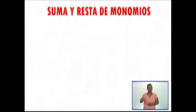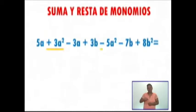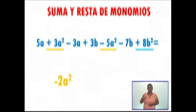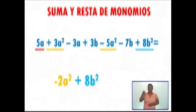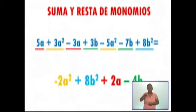Vamos a ver otro ejemplo. Aquí tengo 5a más 3a cuadrada menos 3a más 3b menos 5a cuadrada menos 7b más 8b cuadrada. Empiezo con los términos semejantes en orden alfabético, los cuadráticos primero. 3a cuadrada menos 5a cuadrada da menos 2a cuadrada. 8b cuadrada, como no hay otra b cuadrada, se pasa igual. 5a menos 3a son 2a. 3b menos 7b da menos 4b. Nuestro resultado final es menos 2a cuadrada más 8b cuadrada más 2a menos 4b.